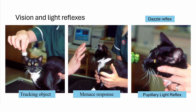Starting with vision and light reflexes — in many ways these are assessed altogether because some tests assess both. First, we need to establish the animal can actually see. For that, I'm most likely to use a dropped piece of cotton wool. It doesn't make any sound, and the white makes it visually apparent to colour-blind animals. You can drop it from one side and then the other to assess each eye individually.